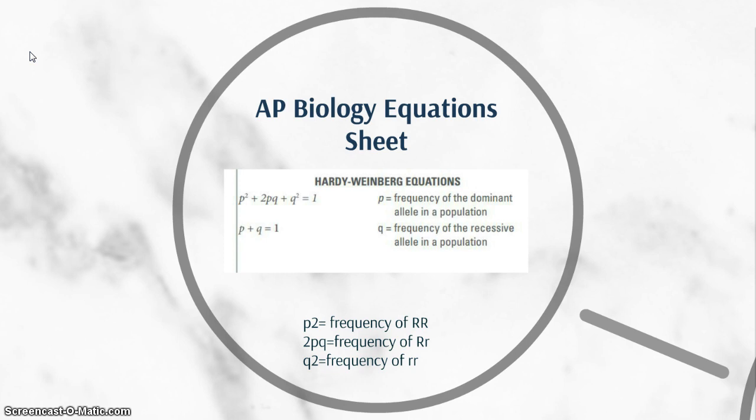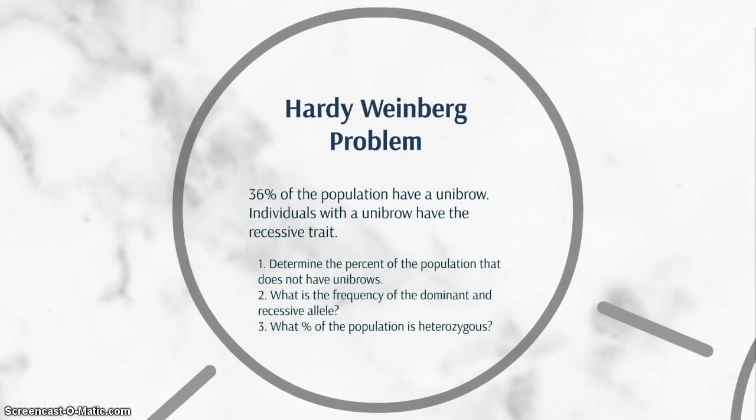you the frequency of individuals that have the homozygous dominant trait. 2pq is the frequency of individuals with the heterozygous genotype, and then q squared is the frequency of individuals that are homozygous recessive. Okay, so here's an example problem.